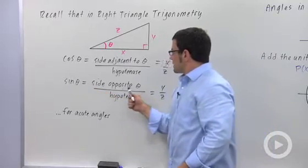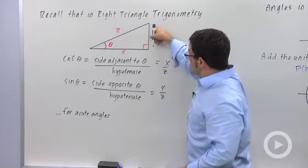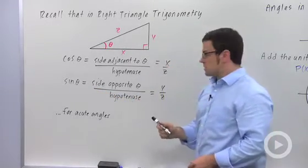The sine is defined as the side opposite theta, y, over the hypotenuse. So y over z.